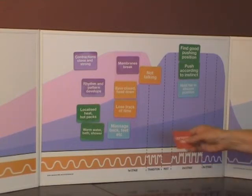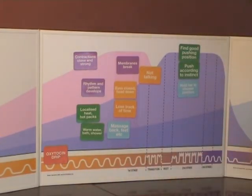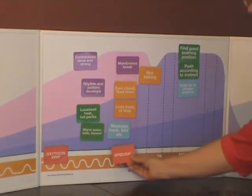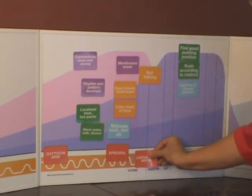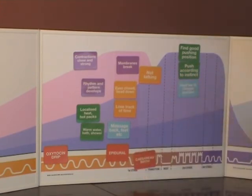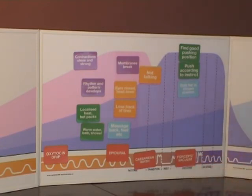The red set look at potential complications. Perhaps an oxytocin drip being needed, or the mother deciding she needs an epidural. Perhaps even a caesarean birth, or maybe in second stage forceps or vacuum might be needed.